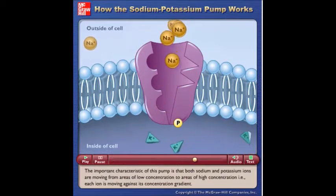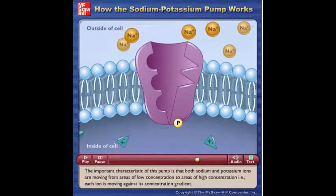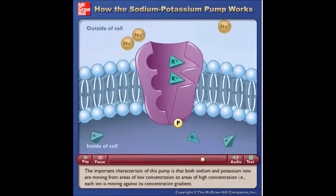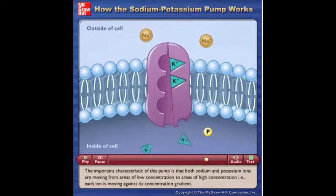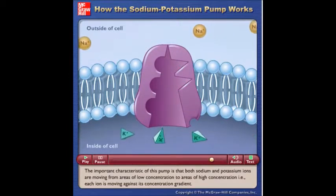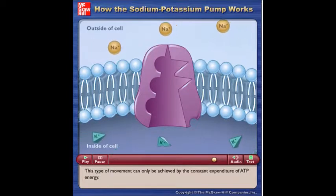The important characteristic of this pump is that both sodium and potassium ions are moving from areas of low concentration to areas of high concentration. In other words, each ion is moving against its concentration gradient. This type of movement can only be achieved by the constant expenditure of ATP energy.